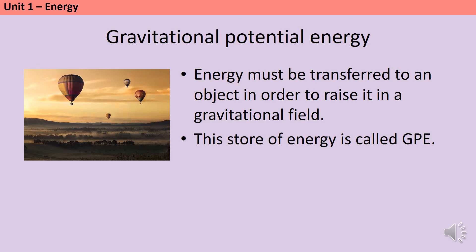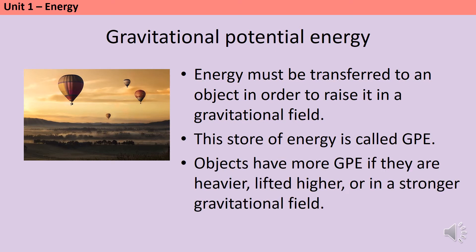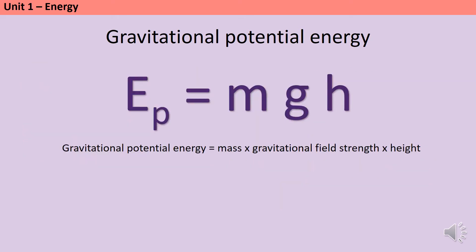There are three things that will influence the size of a gravitational potential energy store: how heavy the object is, or its mass; the height it's been lifted to; and the strength of the gravitational field. If we put these three components together we can make up the ninth equation that you need to memorize for the exams, or the eleventh if you're taking triple science.